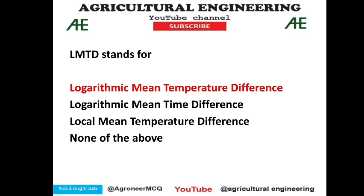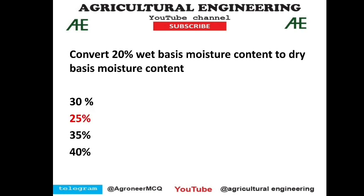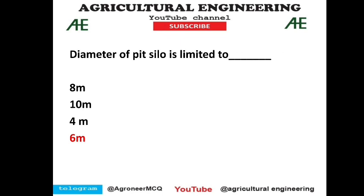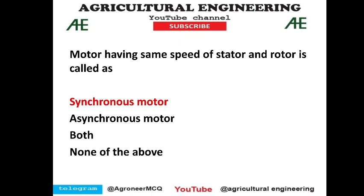LMTD stands for Logarithmic Mean Temperature Difference — from the heat and mass transfer portion, option 1 is correct. Converting 20 percent dry basis moisture content: this question was covered in our Telegram channel and mock test, and the answer is 25 percent, option B is correct. The diameter of a pit silo is limited to 6 meters. A motor having the same speed of stator and rotor is called a synchronous motor.